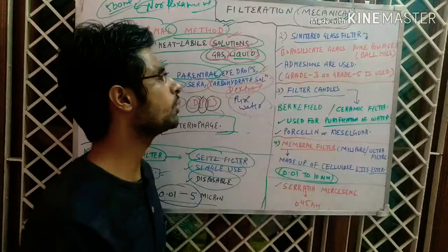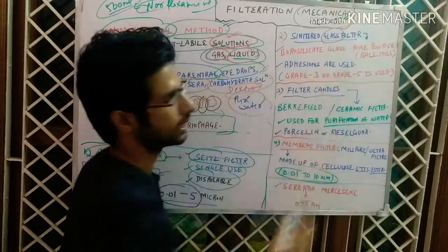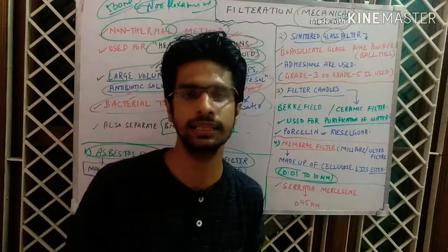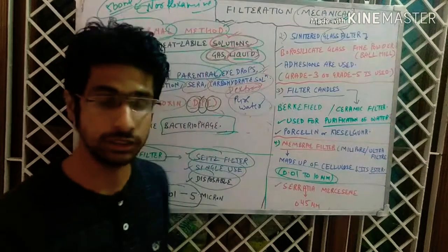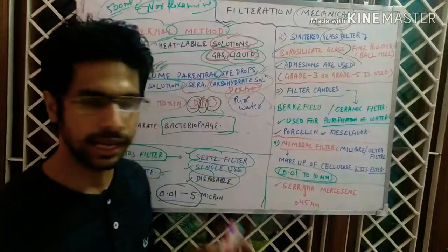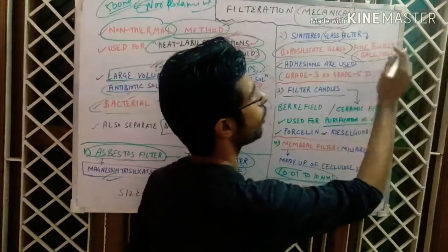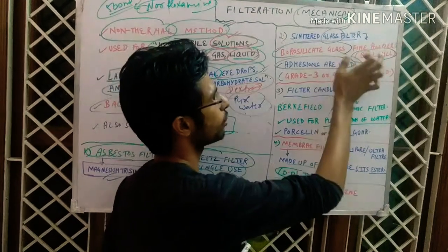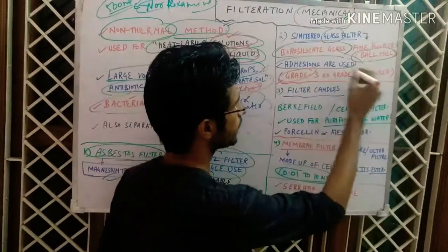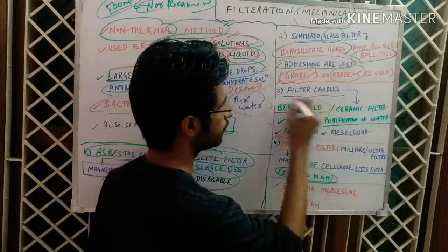The sintered glass filter: the beaker is made of borosilicate glass, and when borosilicate glass is powdered in a ball mill — a point sometimes asked in GPAT — an adhesive is used to bind the fine powder into a filter. This filter comes in grades; grade 3 and grade 5 are the commonly used grades for sterilization purposes.